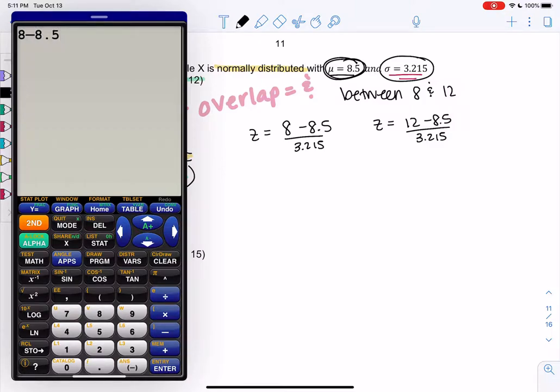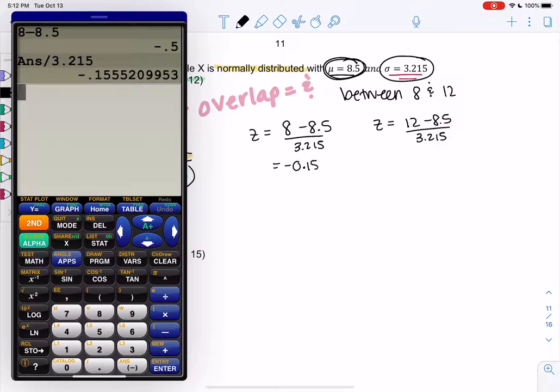And let's find those z-scores. So we'll subtract, 8 minus 8.5, enter, divide by 3.215. And my first z-score is negative 0.155. 1.56, that's going to round up.